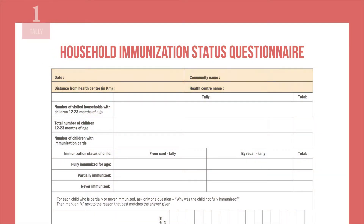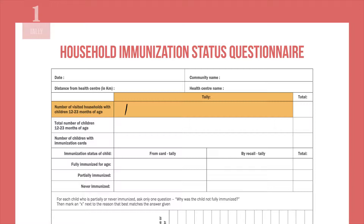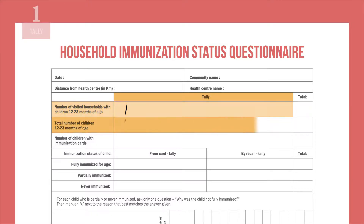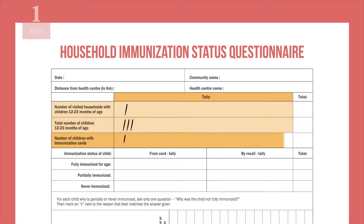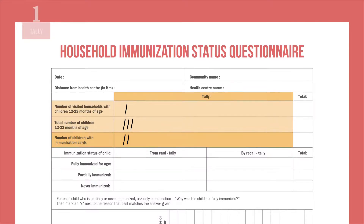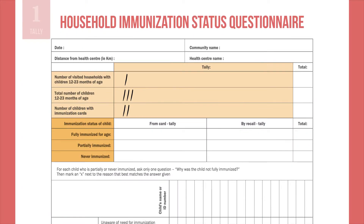Every time you visit a household, tally each household with children aged 12 to 23 months, the number of children in the household within that age range, and the number of children with immunization cards. Then record the immunization status of each child. If the child has an available card, tally whether they are fully, partially, or never immunized under the from card tally.